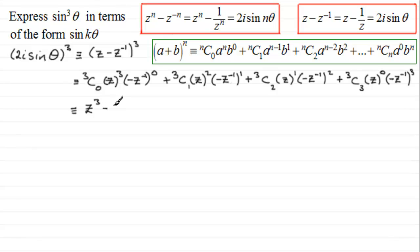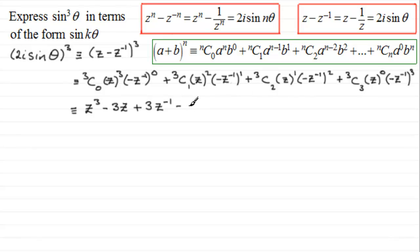For the next term, 3C2 is 3, and minus z to the power minus 1 all squared is positive, so z to the power 1 times z to the power minus 2 gives z to the power minus 1, yielding plus 3z to the power minus 1. On the last term, 3C3 is 1, z to the power 0 is 1, and minus z to the minus 1 cubed gives minus z to the power minus 3.